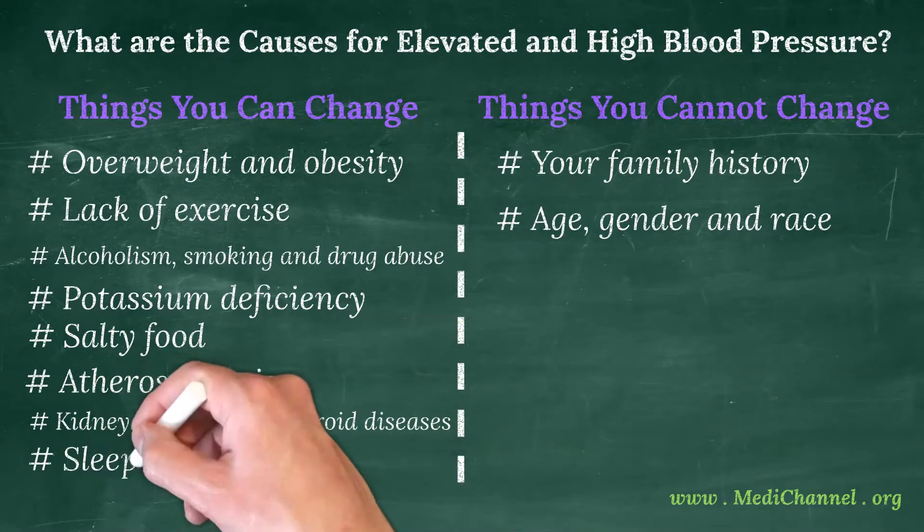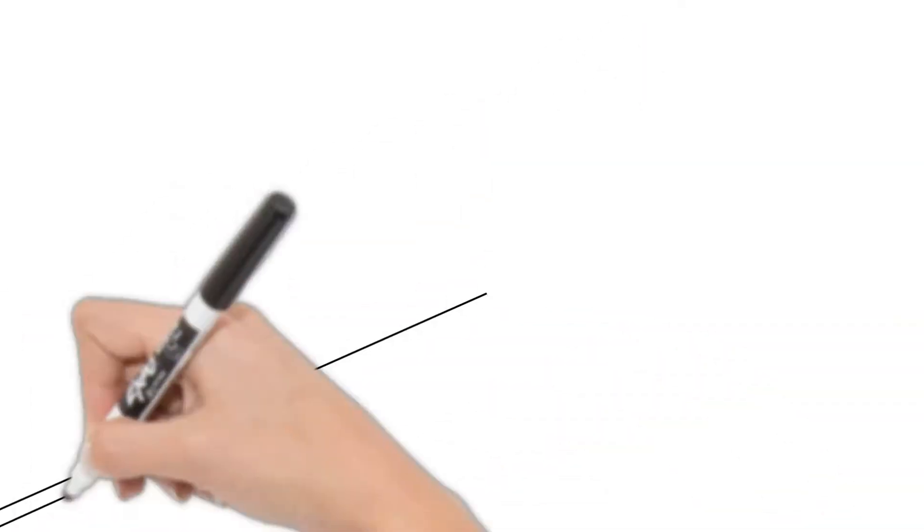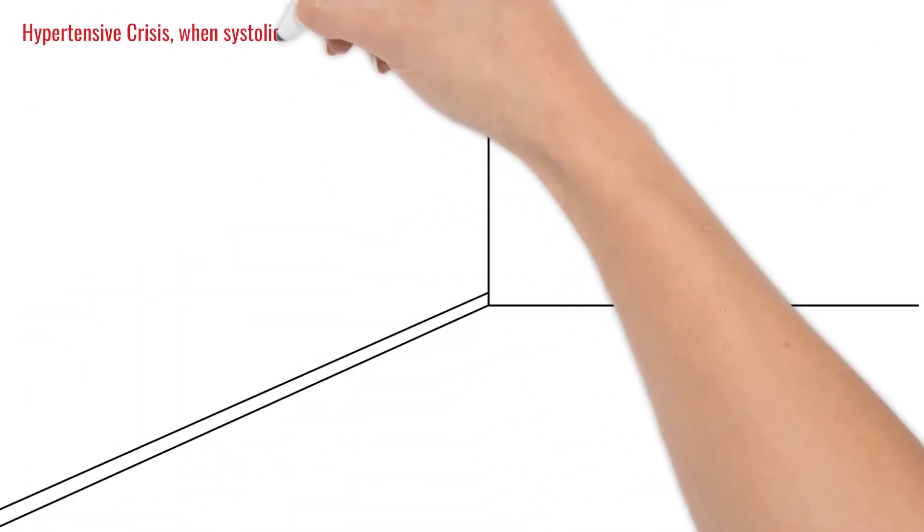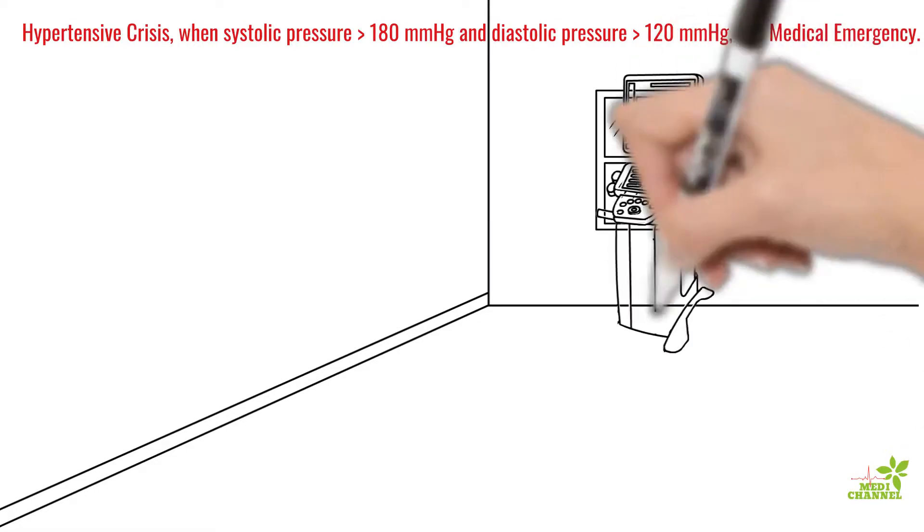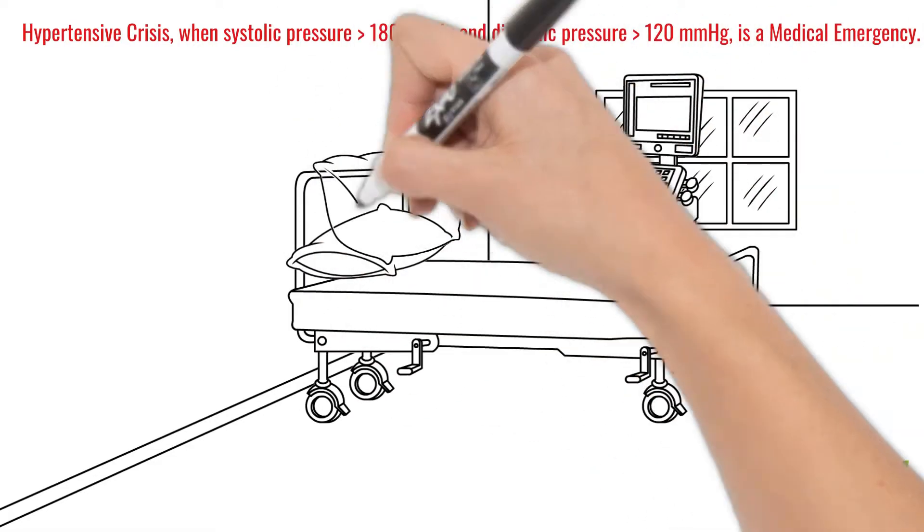When the patient is in stage 2, there is a need for regular blood pressure monitoring and medical attention to prevent progression to hypertensive crisis. When systolic pressure is 180 mmHg or over and diastolic pressure 120 mmHg or over, that is referred to as hypertensive crisis.